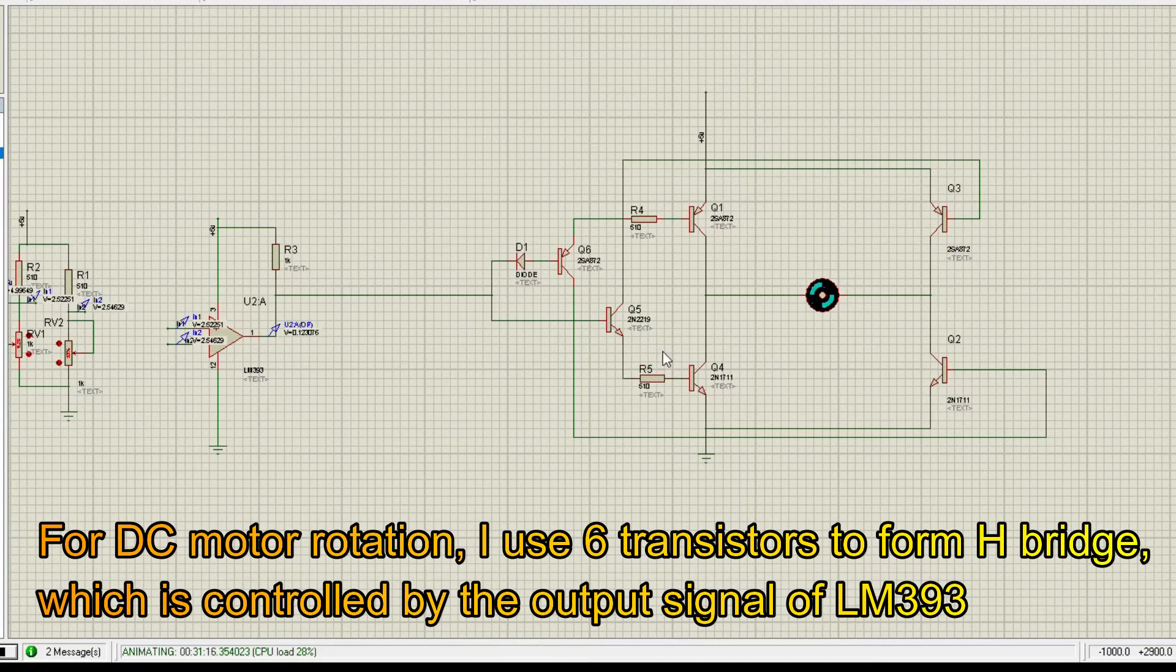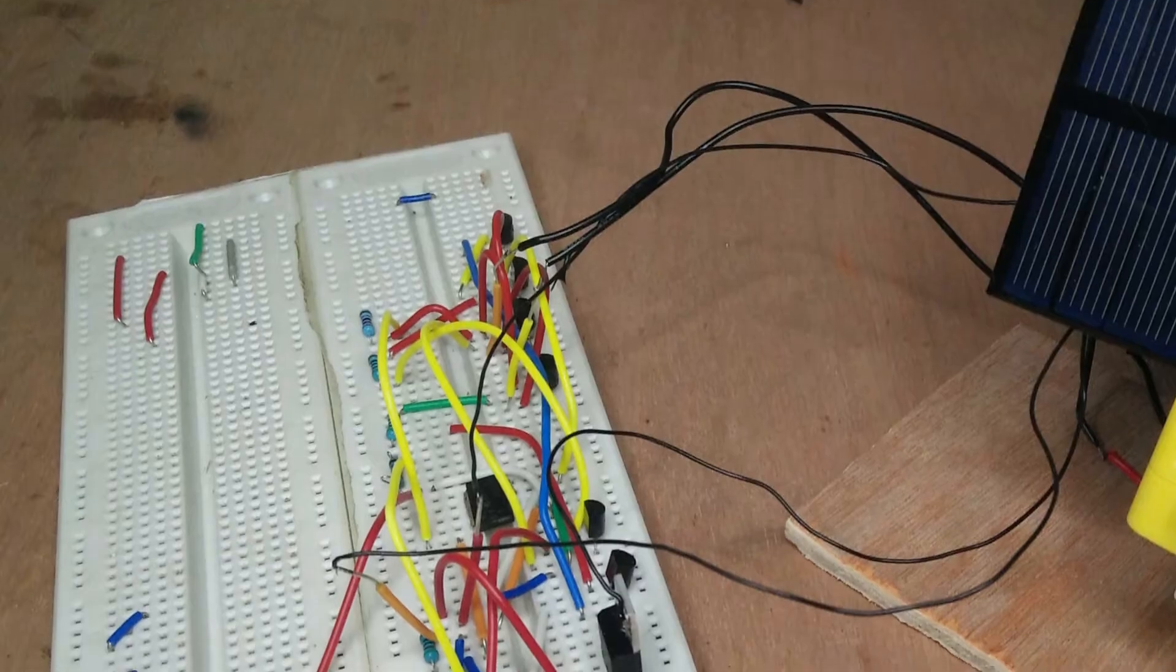For DC motor rotation, I use six transistors to form H-bridge, which is controlled by the output signal of LM393.